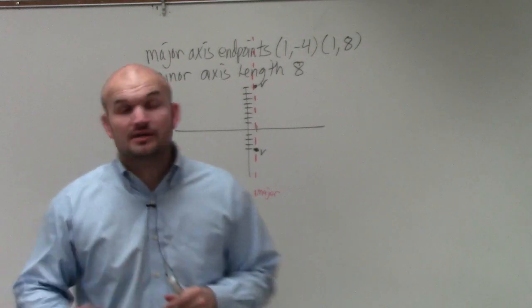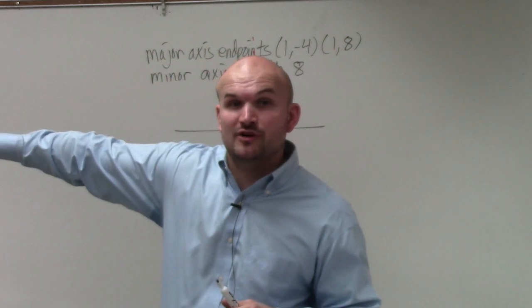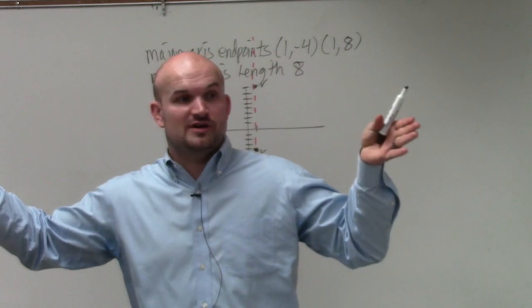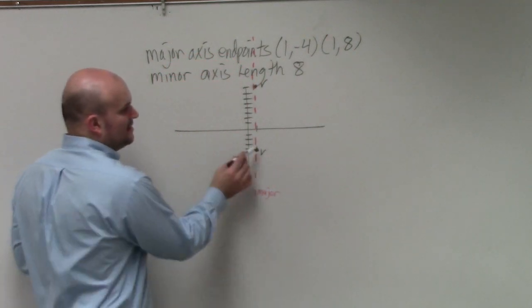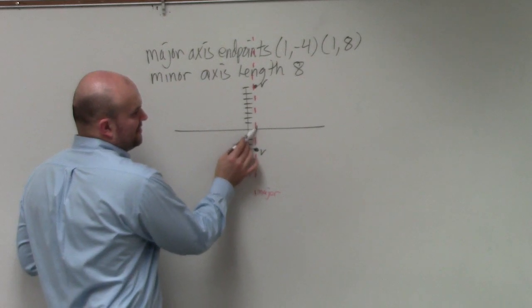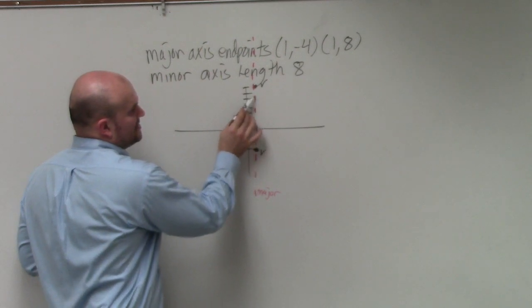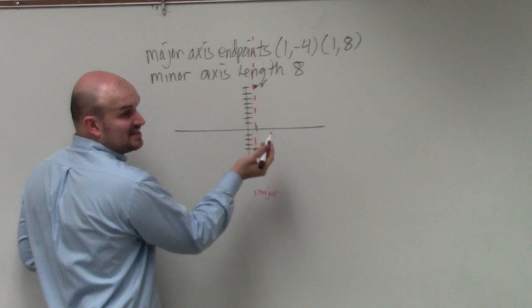I also know that the center is midway between my two vertices. So as long as I know my two vertices, I just need to find the center point between the two vertices to find my center. So I see the length is 1, 2, 3, 4, 5, 6, 7, 8, 9, 10, 11, 12. So therefore, half the distance would be 6.